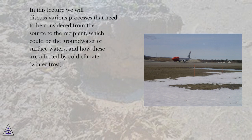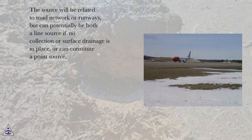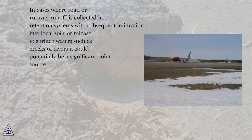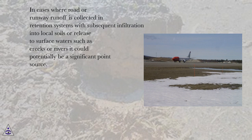In this lecture we will discuss various processes that need to be considered from the source to the recipient, which could be the groundwater or surface waters, and how these are affected by cold climate and winter frost. The source will be related to road network or runways, but can potentially be both a line source if no collection or surface drainage is in place, or can constitute a point source. In cases where road or runway runoff is collected in retention systems with subsequent infiltration into local soils or release to surface waters such as creeks or rivers, it could potentially be a significant point source.